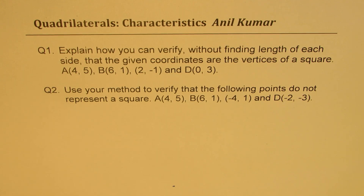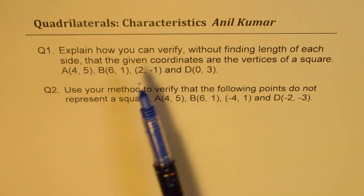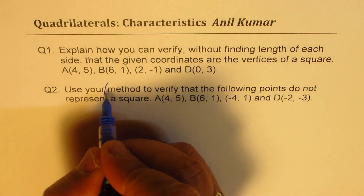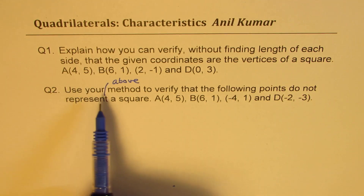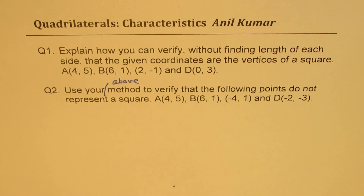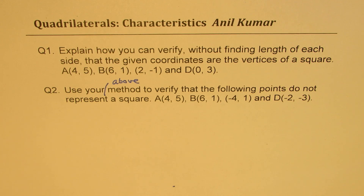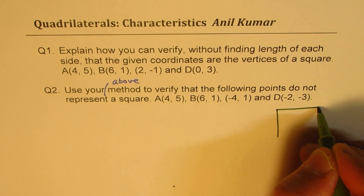Question number two: use your above method to verify that the following points do not represent a square — they represent something else. So these are your questions. You can always pause the video, answer the question, and then look into my suggestions. Now let's first talk about what a square is, and then we will work out a scheme to verify that these points represent a square.